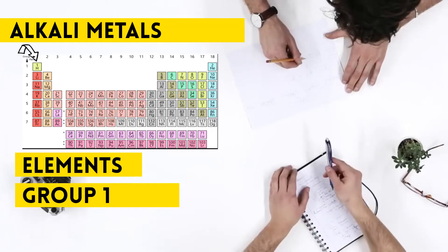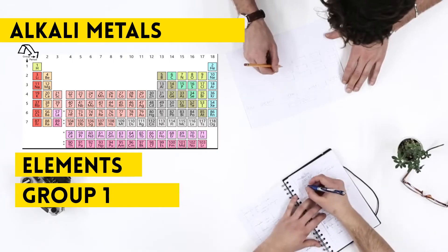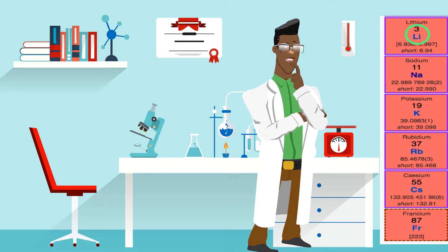The alkali metals are found in Group 1 of the Periodic Table. They include Lithium, Sodium, Potassium, Rubidium, Cesium, and Francium.